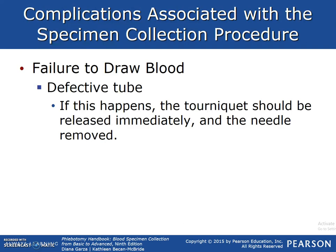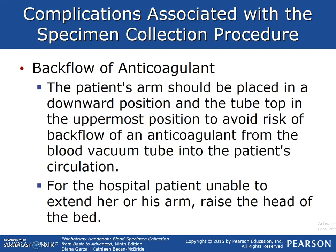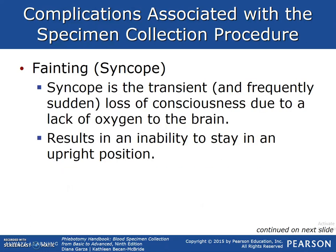If a defective tube situation occurs, the tourniquet should be released immediately and the needle removed. Backflow of anticoagulant: the patient's arm should be placed in a downward position with the tube top in the upright position to avoid risk of backflow of anticoagulant from the blood vacuum tube into the patient's circulation. For the hospital patient unable to extend his or her arm, we're going to raise the head of the bed. Fainting or syncope: syncope is the transient and frequently sudden loss of consciousness due to lack of oxygen to the brain, resulting in an inability to stay in an upright position.